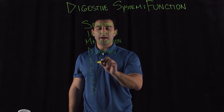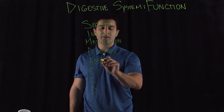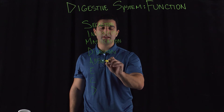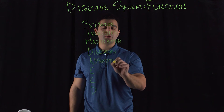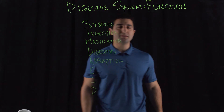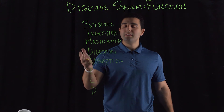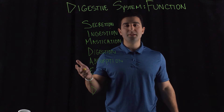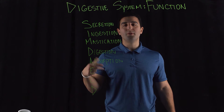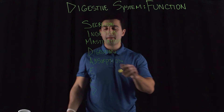You have absorption. Where does absorption take place? The majority of absorption takes place in the small intestine, but as I mentioned before, the stomach plays a big role in absorbing water and alcohols.